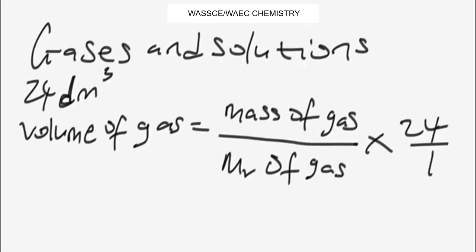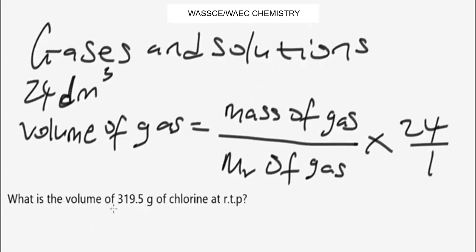Let's look at this question: What is the volume of 319.5 grams of chlorine gas at room temperature and pressure?